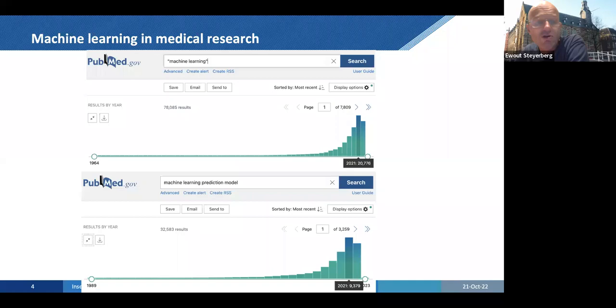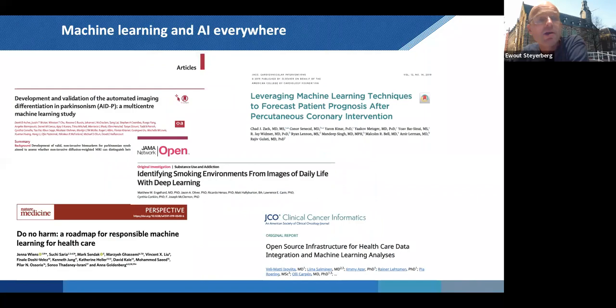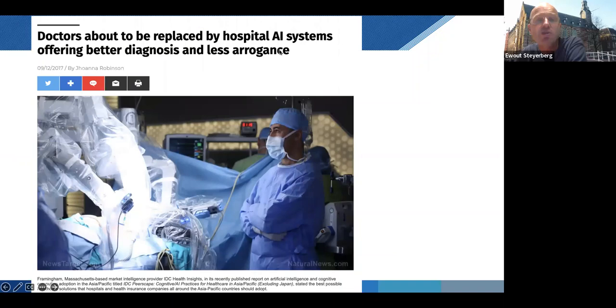That's the state of affairs we have. If you look for prediction in particular, then there were also several thousands in the recent years. It's everywhere, right, we have these papers in really big journals, development validation of imaging differentiation in Parkinson's, and machine learning to forecast, and also some perspectives, and these are popping up more and more, do no harm, responsible machine learning, some thoughts about that. Here is something about the data infrastructure that we may need to do these kinds of approaches, machine learning. And this I liked, doctors about to be replaced by hospital AI systems offering better diagnosis and less arrogance.